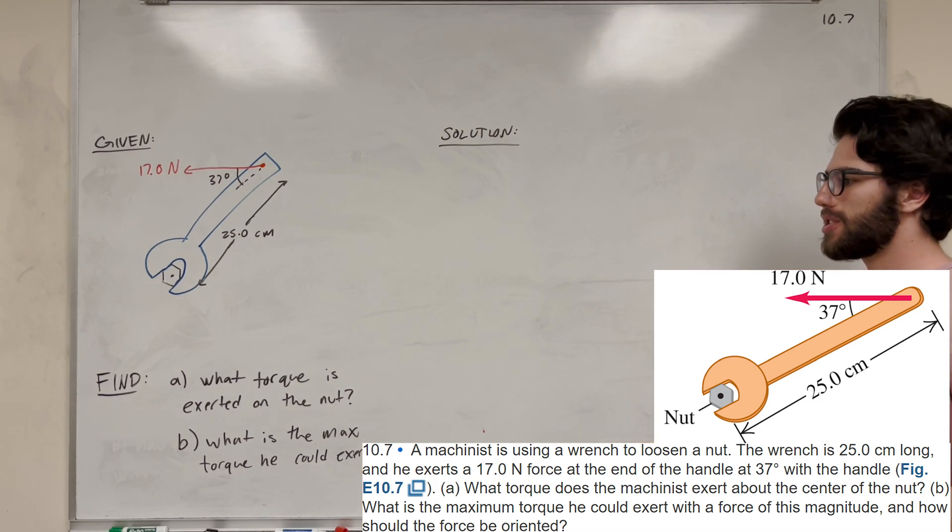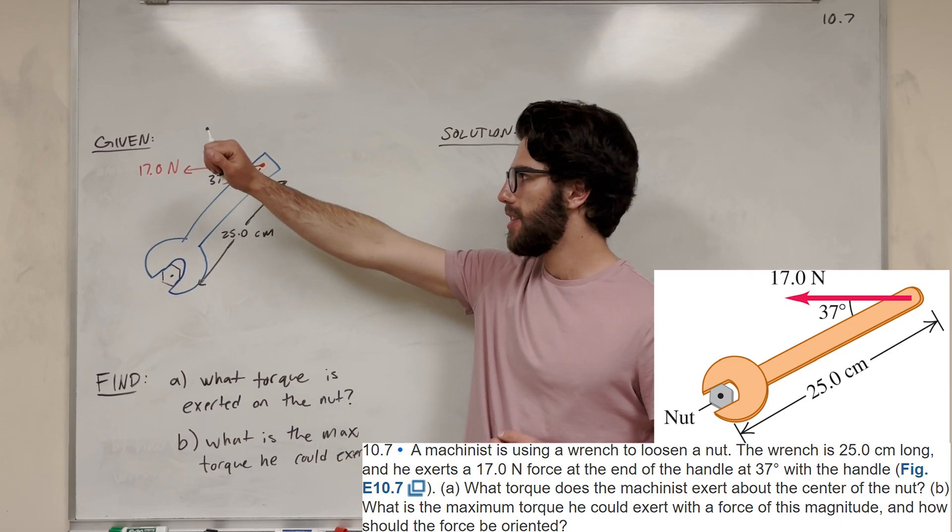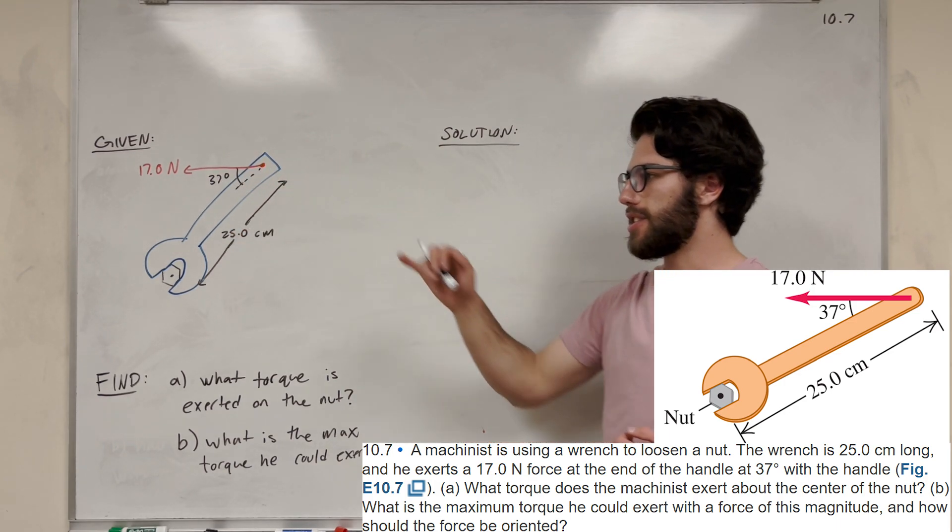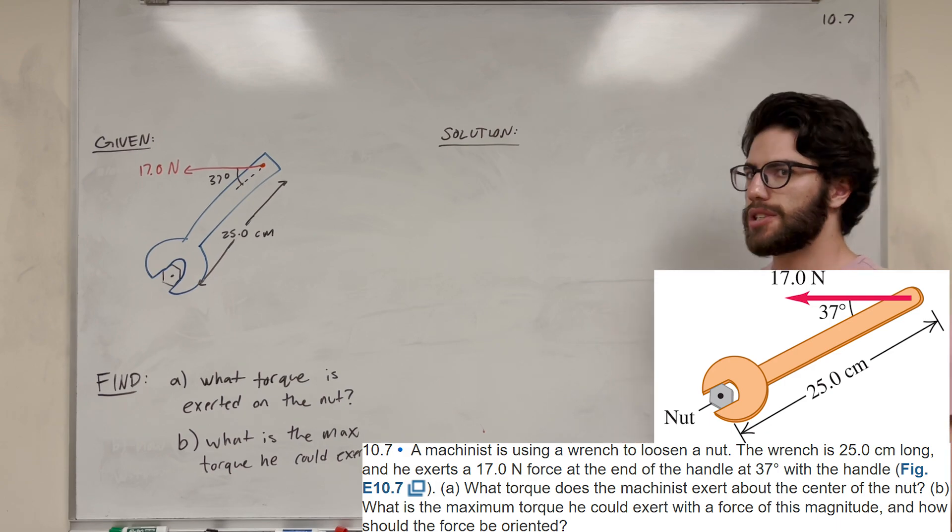What's up, Cal gang? Welcome back to physics. So let's solve this torque question. We have a wrench here, and we're applying torque to the end of it. It's acting at this angle, at a distance away from the nut. So for part A, we're going to find what torque is exerted on the nut. Let's go ahead and solve that.